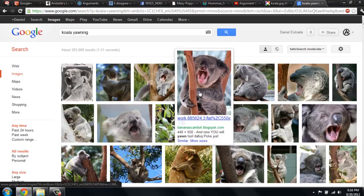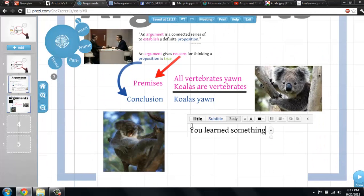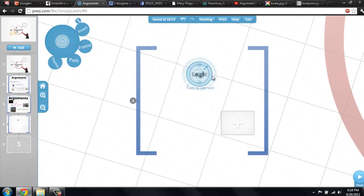If the premises are true, it entails the truth about koalas, which you can discover by logically analyzing the other things you know. Logic is the science of arguments.